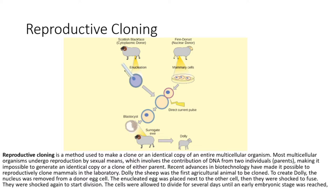Recent advances in biotechnology have made it possible to reproductively clone mammals in the laboratory. Dolly the sheep was the first agricultural animal to be cloned.